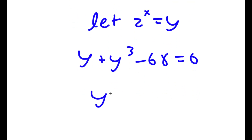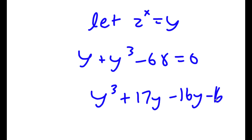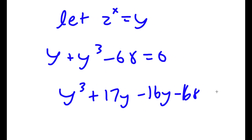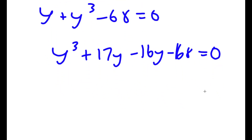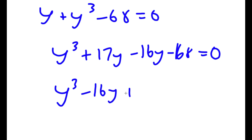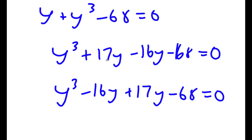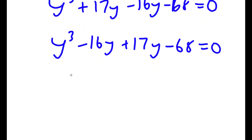This is the same thing as y cubed plus — I'm going to write y as 17y minus 16y — minus 68 is equal to 0. Rearranging, I get y cubed minus 16y plus 17y minus 68 is equal to 0. I simply switch the places of 17y and negative 16y.